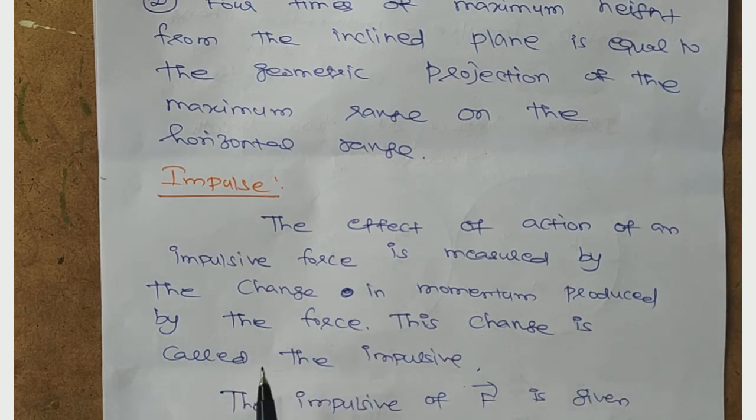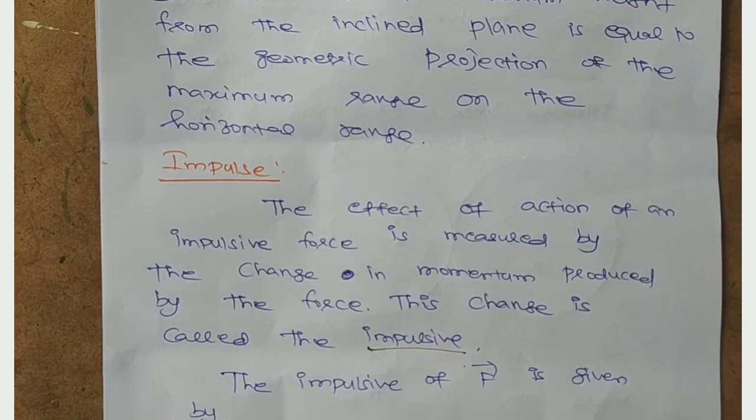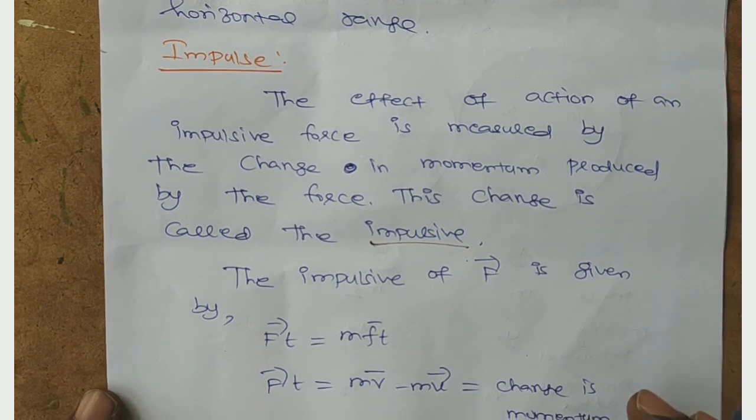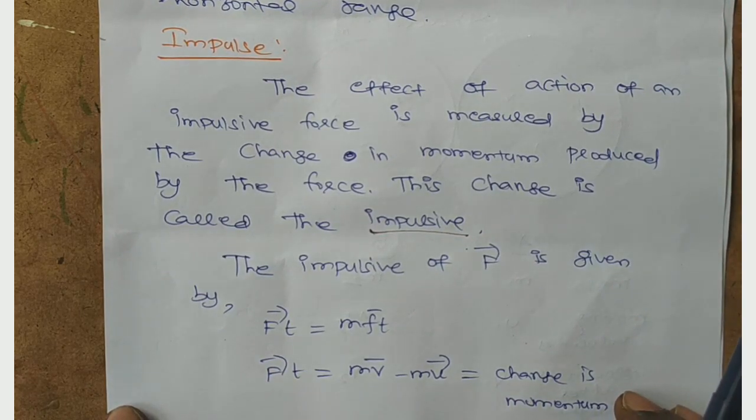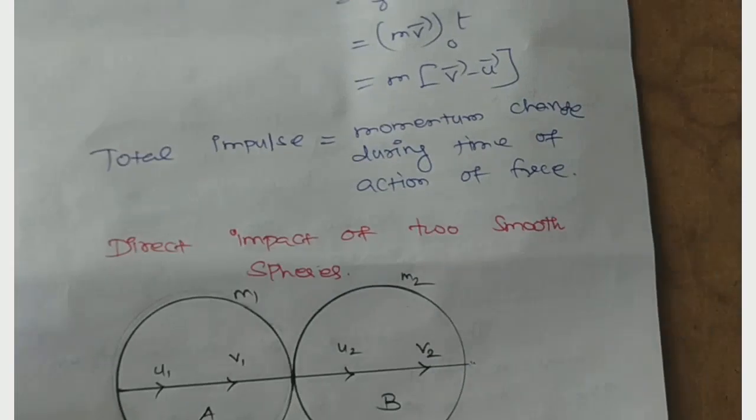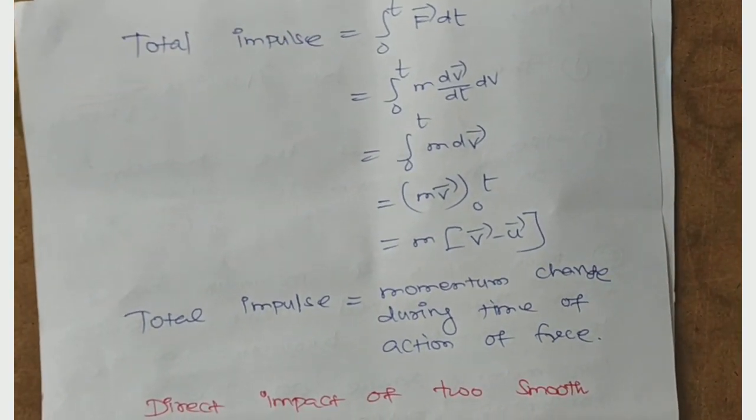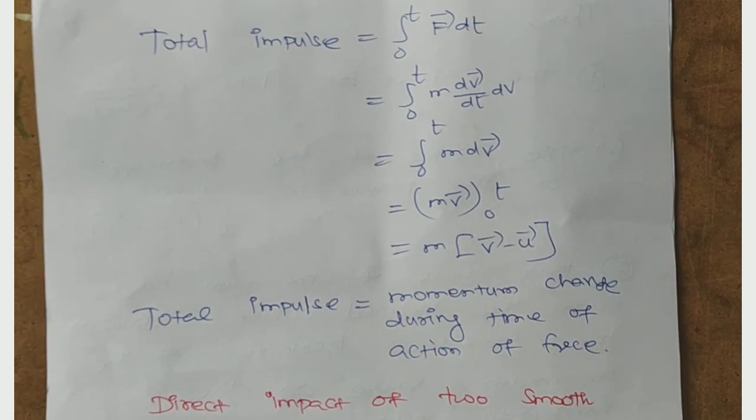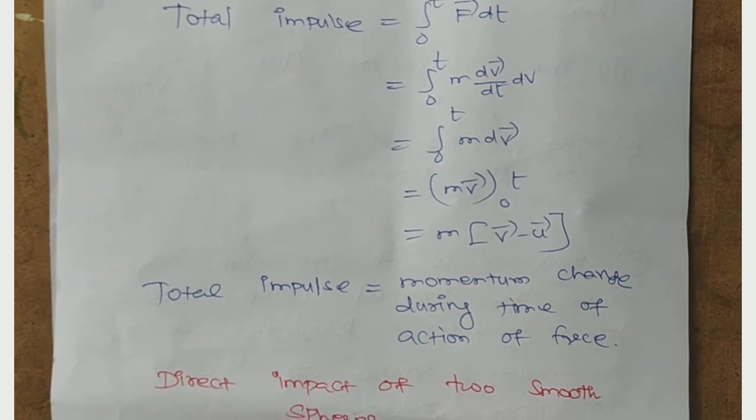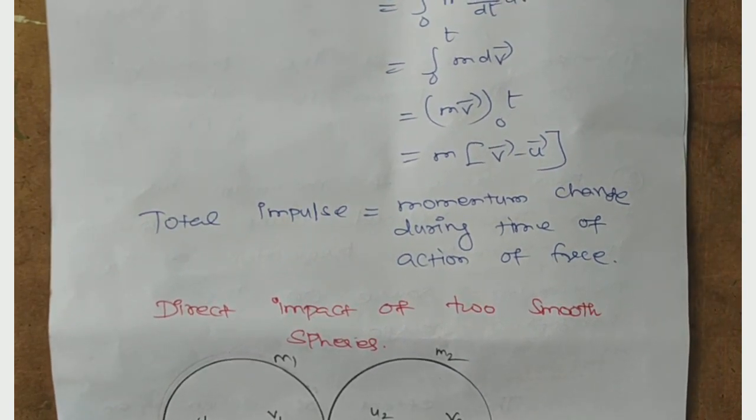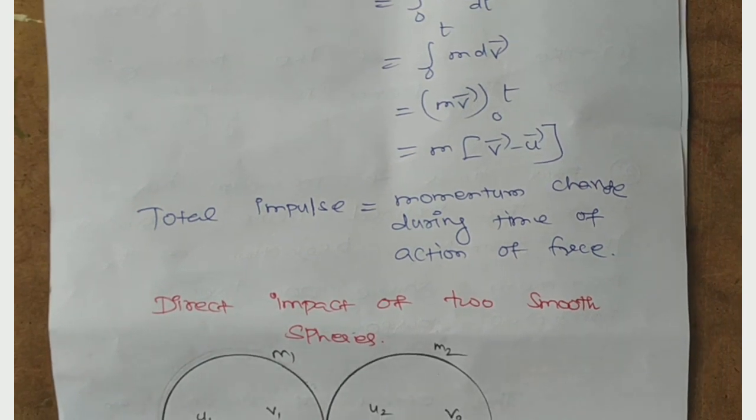Next, impulse. The effect of action of an impulsive force is measured by the change of momentum produced by the force. This change is called impulse. The impulse of F is given by F into t equal to M into v minus M into u. That is called change of momentum. The total impulse is integral from 0 to T of F dt, which equals M(v - u). The total impulse is the momentum change during the time of action of force.